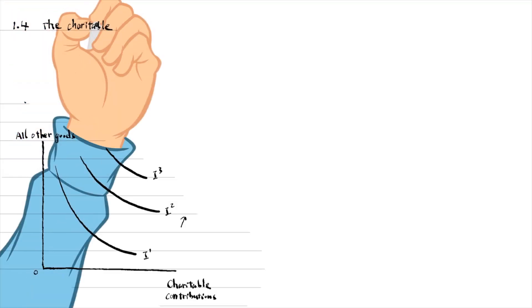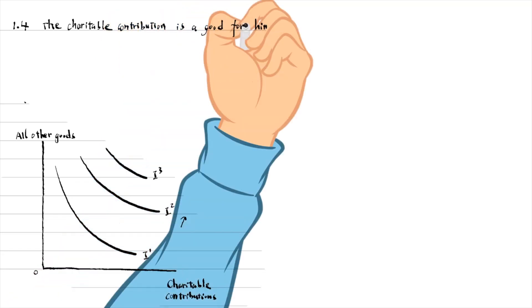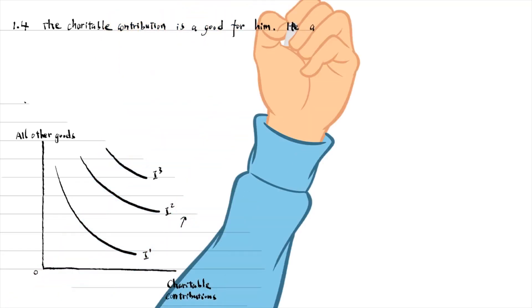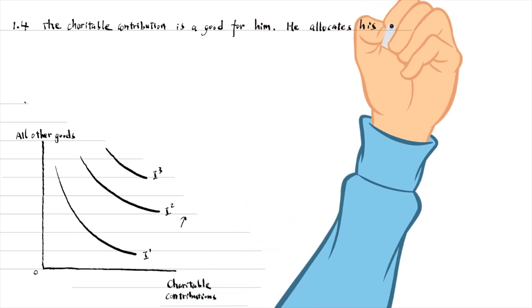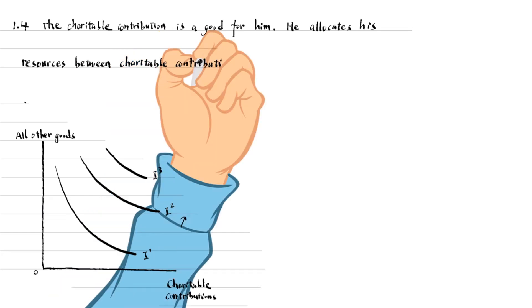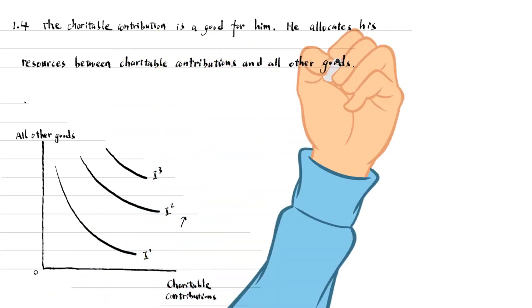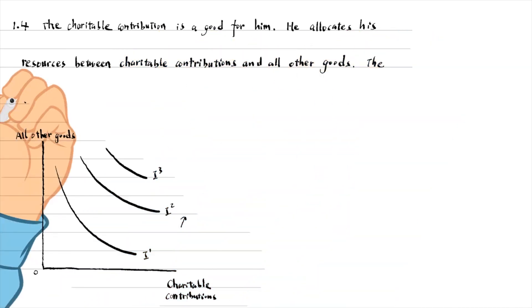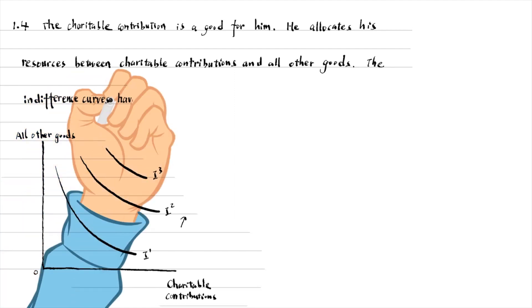The charitable contribution is a good for him. He allocates his resources between charitable contributions and all other goods. The indifference curves have the usual convex to the origin shape and will not violate any assumptions.